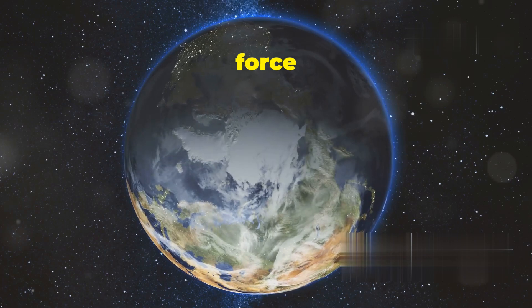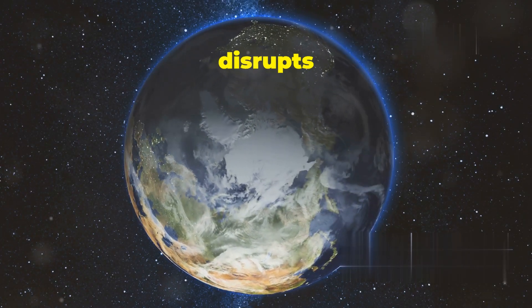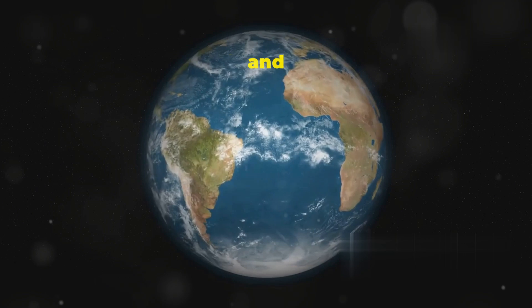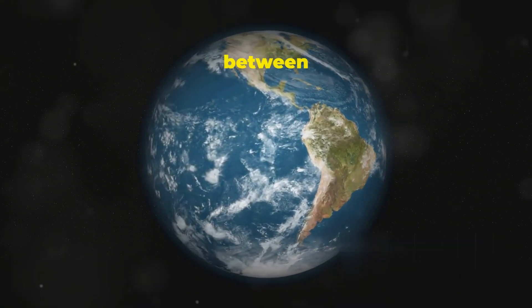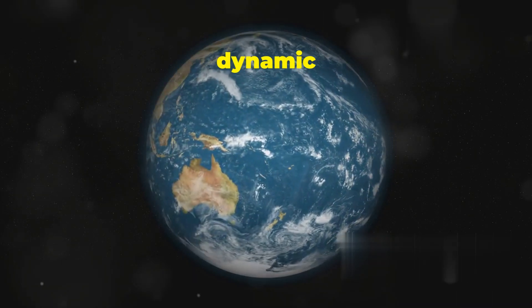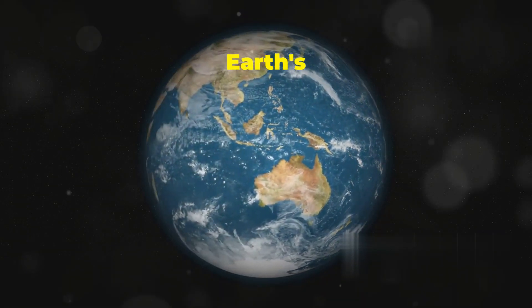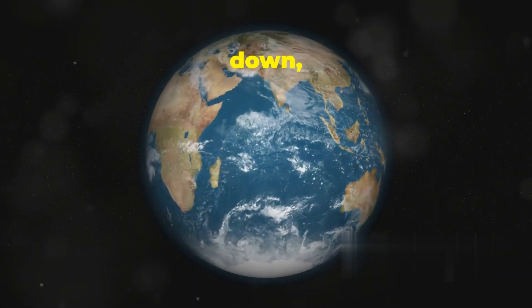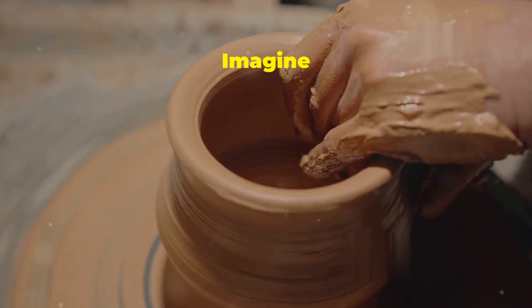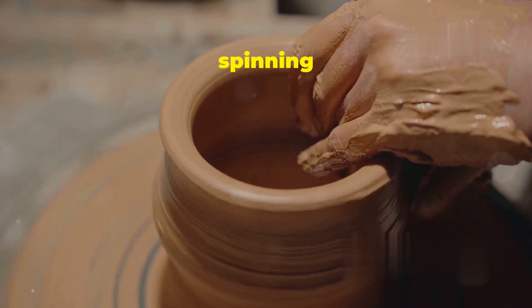However, the centrifugal force generated by Earth's rotation disrupts this perfect symmetry, pulling matter outward at the equator and creating the characteristic bulge. This interplay between gravity and centrifugal force is not a static stalemate but a dynamic equilibrium. If Earth's rotation were to speed up or slow down, this equilibrium would shift, leading to a change in the planet's oblateness.